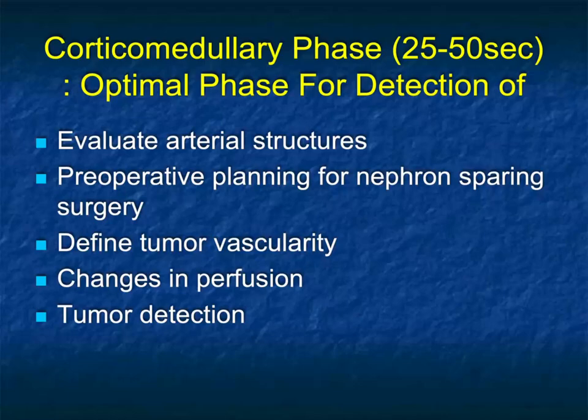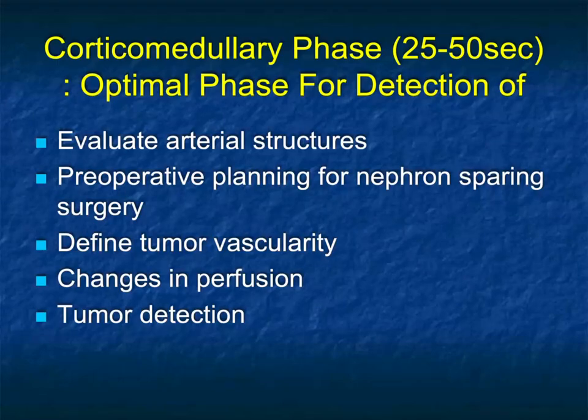The cortical medullary phase defines tumor vascularity and in many cases the specific etiology of the tumor. It's excellent for detecting even subtle changes in perfusion, and some tumors will only be seen in arterial phase, making it excellent for tumor detection. It's probably not the optimal phase for pyelonephritis — a later phase, particularly excretory or late venous phase, is better — but it's still usually accurate.